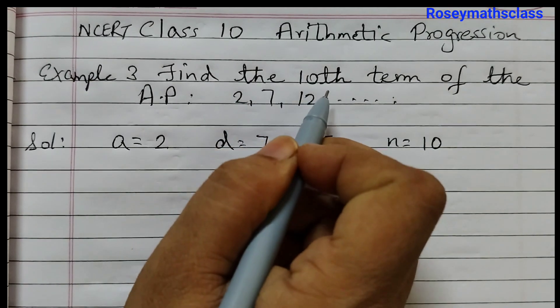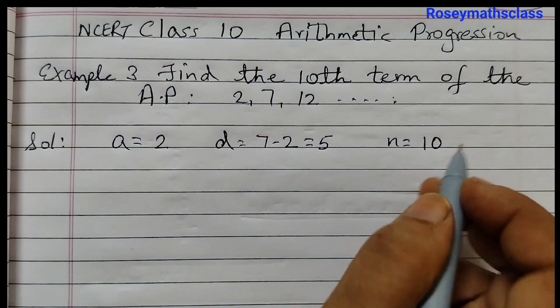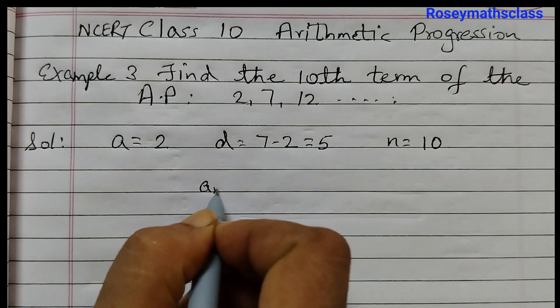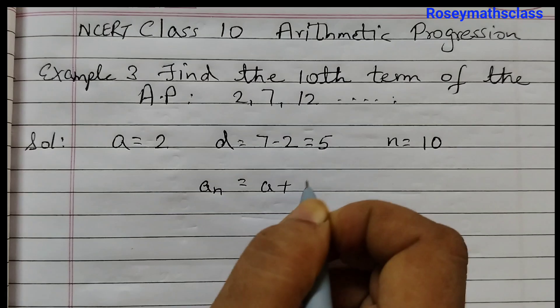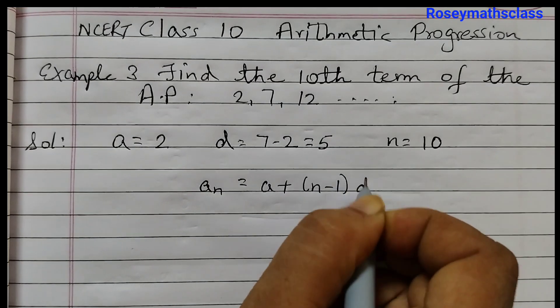So that is the common difference, and N is equal to 10 because we need to find the 10th term. So N is 10. The formula is AN equals A plus (N minus 1) times D,